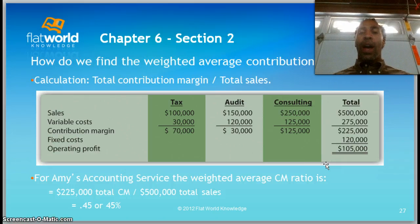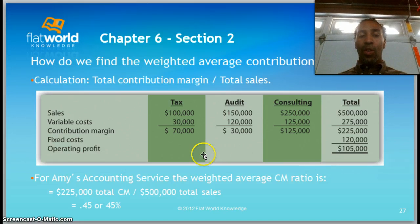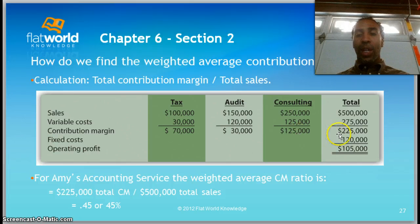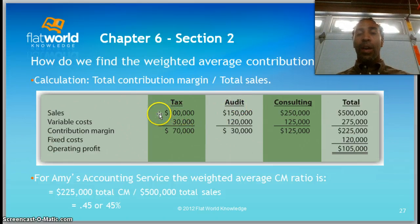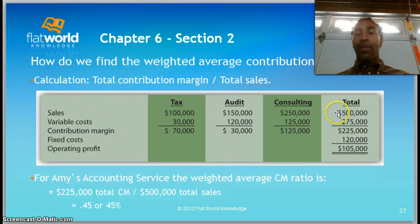How do we find the weighted average contribution margin ratio? The calculation is total contribution margin divided by total sales. For Amy's Accounting Service, the total contribution margin figures are: Tax $70,000, Audit $30,000, Consulting $125,000, totaling $225,000. Total sales are: Tax $100,000, Audit $150,000, Consulting $250,000, totaling $500,000. Those are line one and line three that you'll be dividing.